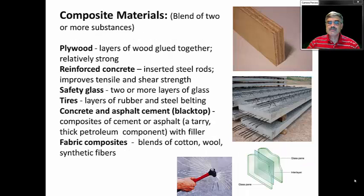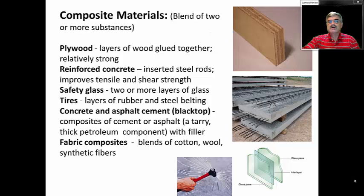I want to now talk about a few composite materials. Composites are a blend or a mixture of two or more substances for the purpose of improving physical properties of that material. Now, some composites you're very familiar with. Plywood. Plywood involves layers of wood glued together. And plywood is a relatively strong material that is used for construction.